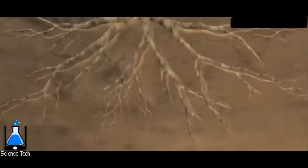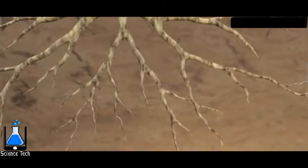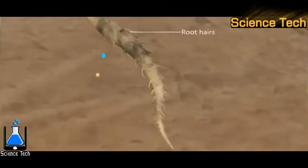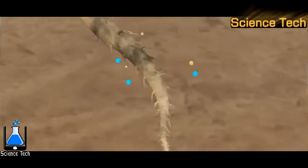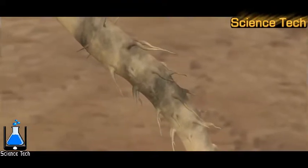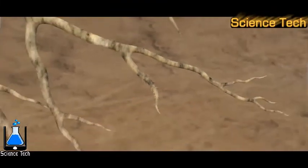Plant roots absorb water and minerals from the soil. Water absorption is mainly carried out by root hairs. These narrow-walled hairs greatly increase the area over which water absorption can take place.